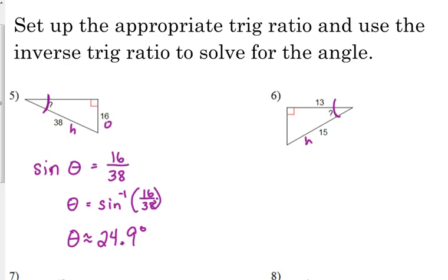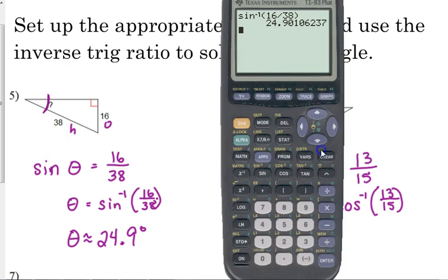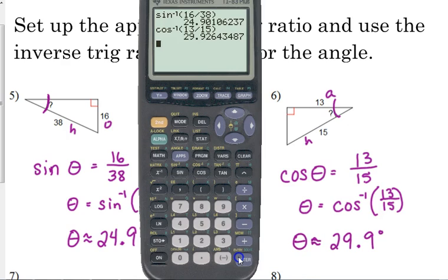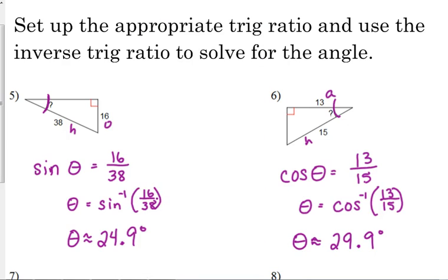15 is, of course, the hypotenuse. 13 would be the adjacent. So what's the trig ratio? Cosine. Cosine of theta is equal to the adjacent 13 over the hypotenuse 15. So theta is equal to the inverse cosine. I know it looks like an exponent of negative 1, but we've talked about inverse notation. That's inverse cosine. Sometimes, probably not in this class, but in the future, you may see that as arc cosine. Just so you know. So theta here is approximately 29.9 degrees.